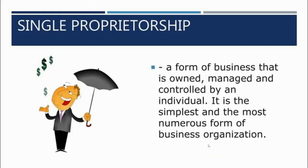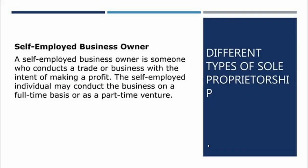Single proprietorship is one form of business organization. We also have partnership, joint stock companies and different forms of companies, and cooperatives. Single proprietorship is a form of business that is owned, managed, and controlled by one individual. It is the simplest and most numerous form of business organization.